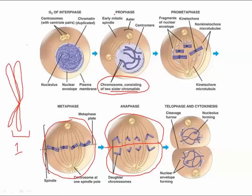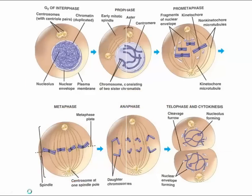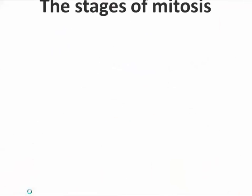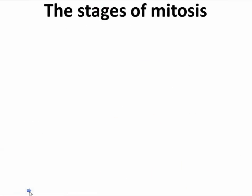So we have prophase, where you start to see the chromosomes. Metaphase, where they line up in the middle. Anaphase, where things start to split up. And telophase, where the whole thing starts to look like an old-school telephone. Let's write down a few things that are important for these four stages.